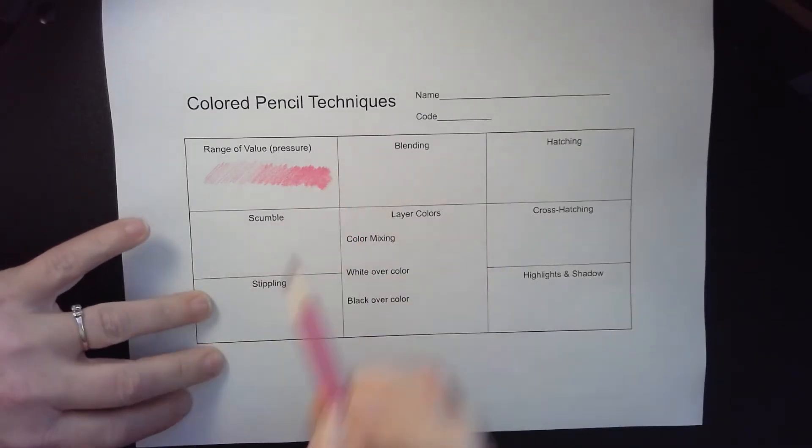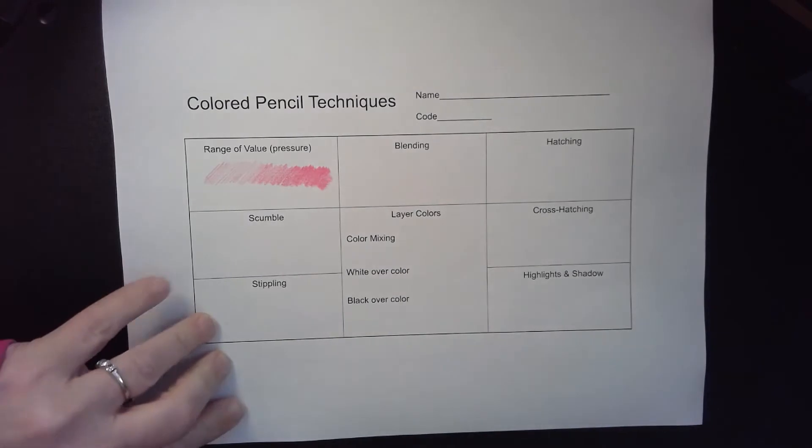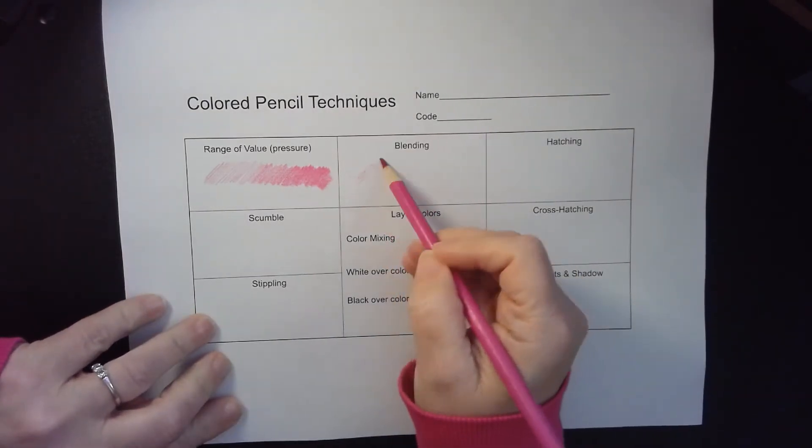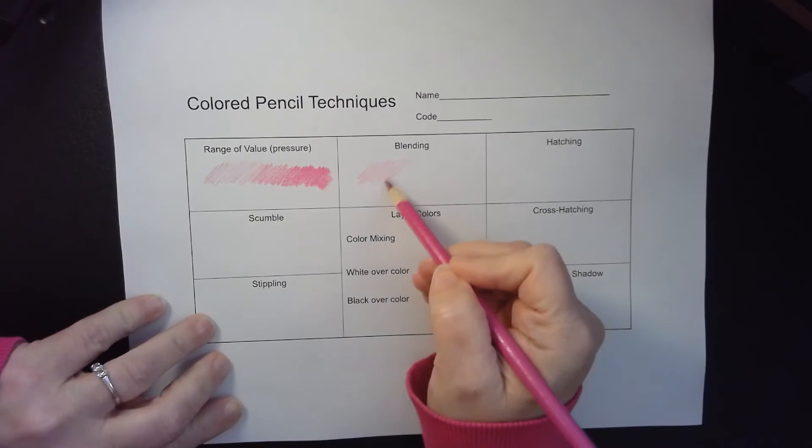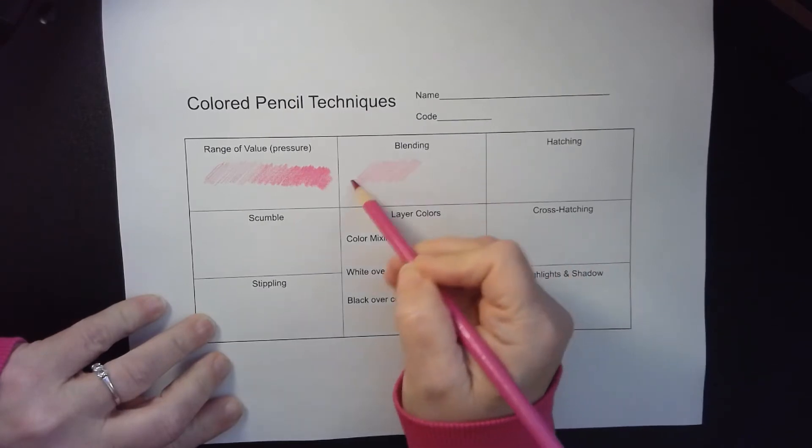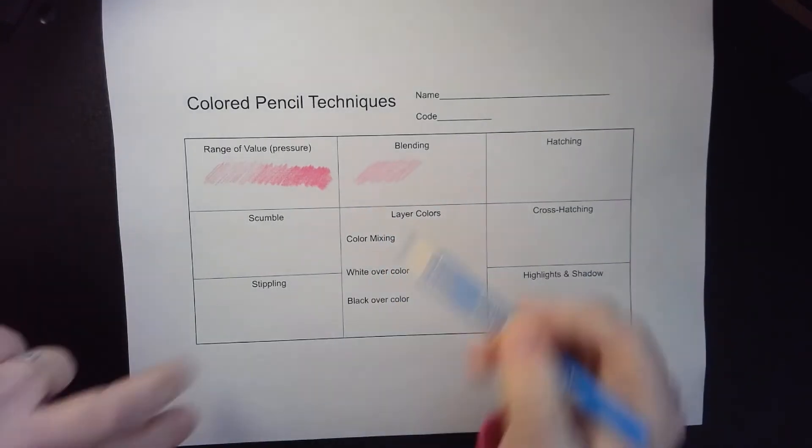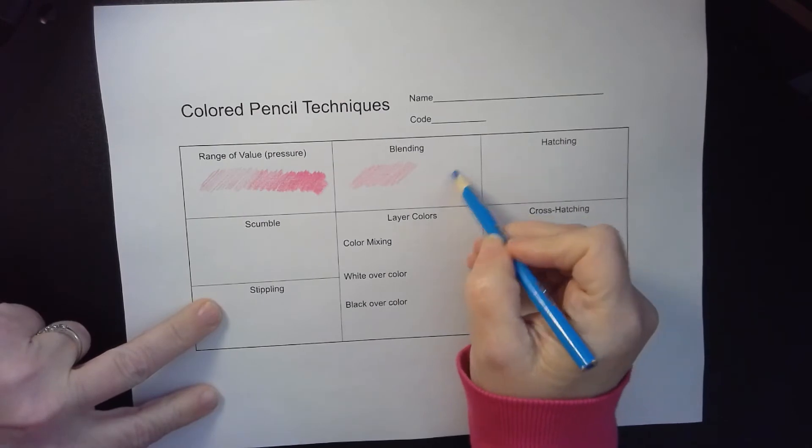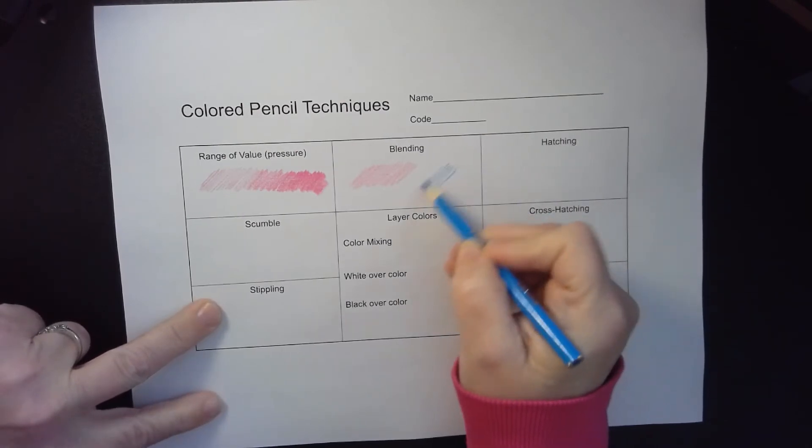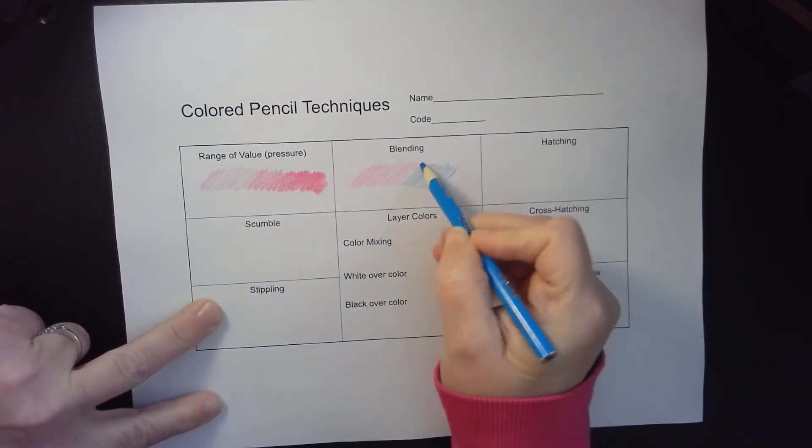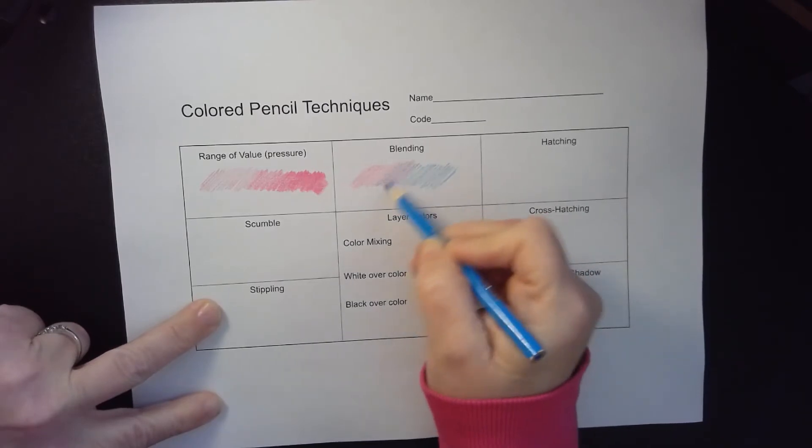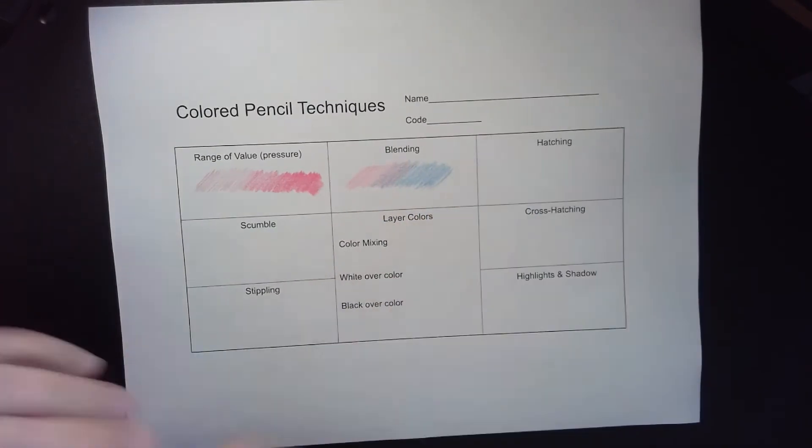So that's the first one. Blending is taking your color lightly coming across, taking a second color, starting from the opposite end, moving over and overlapping your first color. So you're blending one color into the other.